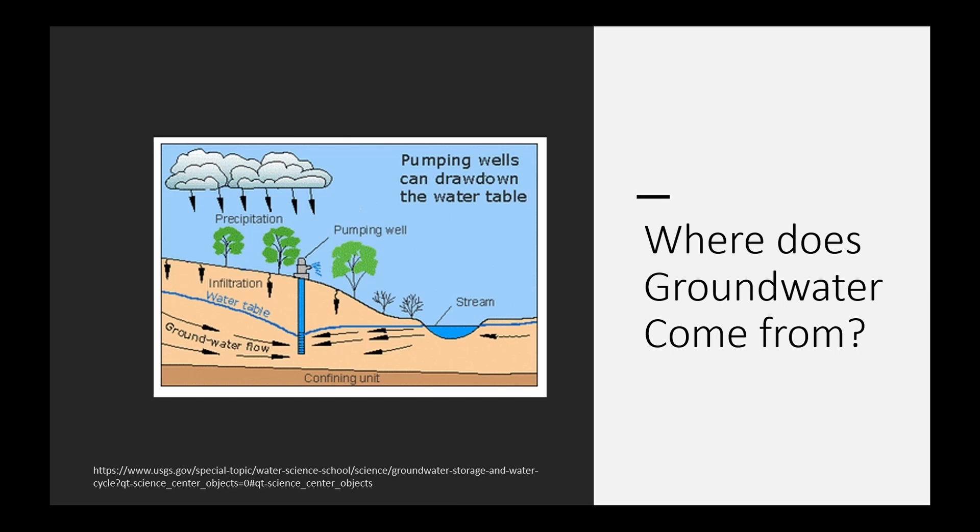This forms an aquifer, which is essentially an underground body of water. The water table is where the soil reaches water capacity and is completely saturated.